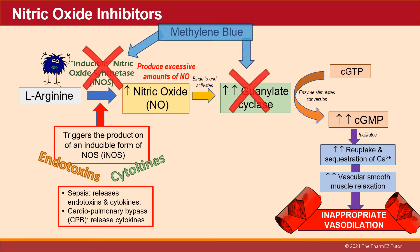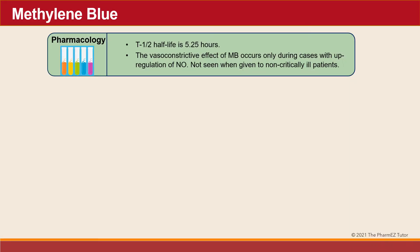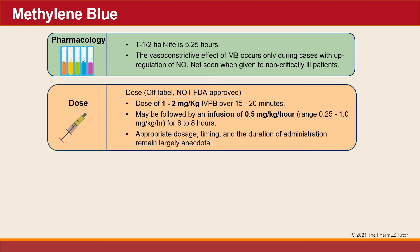Methylene blue works by blocking these two enzymes to prevent downstream vasodilation. Its half-life is about five hours. Its vasoconstrictive effect occurs only during cases when there's upregulation of nitric oxide; it's not normally seen when given to non-critically ill patients. The dosage is off-label and not FDA-approved. It's dosed as 1 to 2 mg per kg IV piggyback given over 15 to 20 minutes, and it may be followed by an infusion of 0.5 mg per kg per hour.